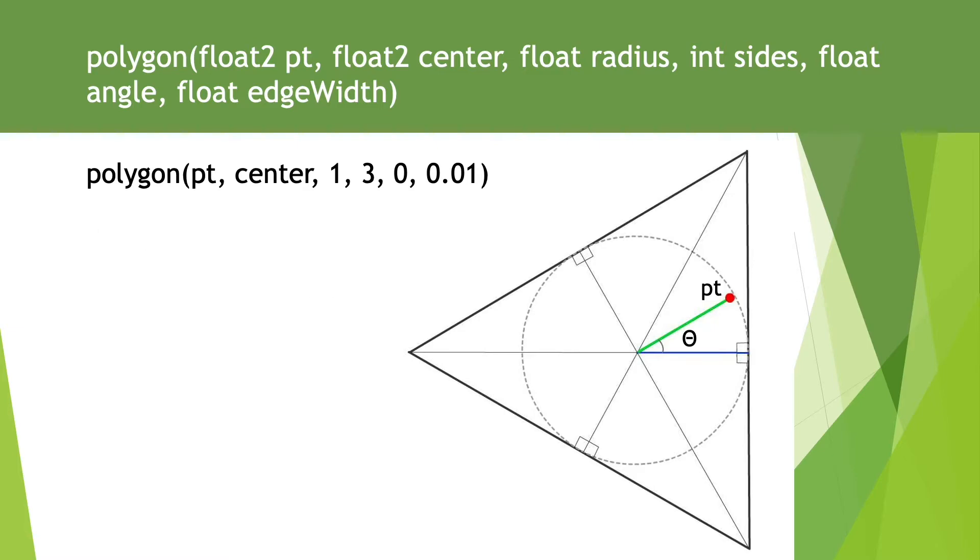Testing of a point as in a circle is simply a case of testing if the length of vector PT is less than radius. The trick here is we adjust the test length, radius, based on the angle theta. You'll see how this works in a moment.